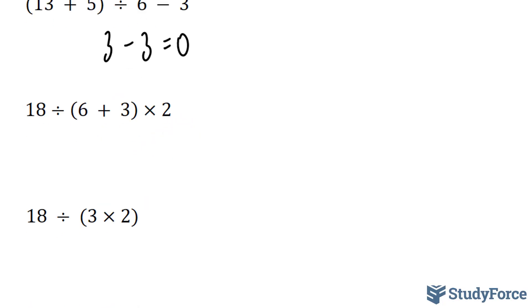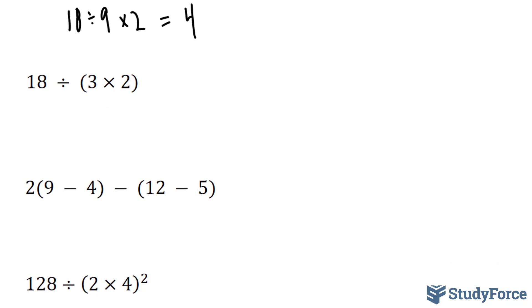Next, we have 18÷(6+3)×2. 6 plus 3 is in brackets, and together that's 9. So now we have 18÷9×2. Working from left to right, since we have only division and multiplication, 18 divided by 9 is 2 times 2 is 4. For this example, we have 18÷(3×2). The product of 3 times 2 is 6, 18 divided by 6 is 3.